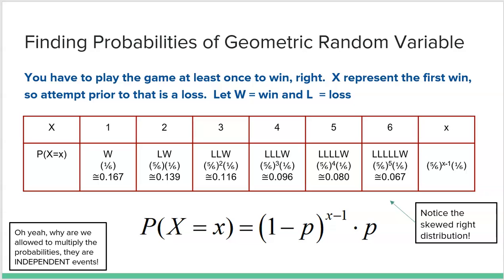Let's find the probabilities of a geometric random variable. The probability of winning on the very first toss is just 1/6, approximately 0.167. The probability that the first win is on the second toss means the first toss was a loss: (5/6) × (1/6) = 5/36, or about 0.139. The probability the first win is on the third trial is (5/6)² × (1/6) — two straight losses followed by the win.